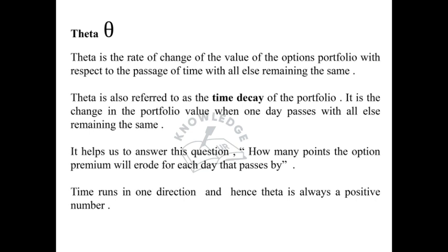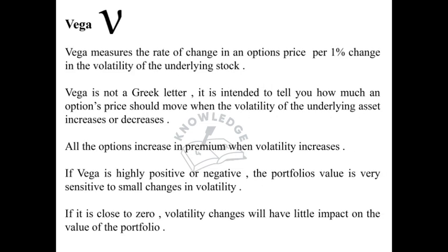The next is Vega. Vega measures the rate of change in an option's price per 1% change in the volatility of the underlying stock. Vega is not a Greek letter, but it is intended to tell you how much an option's price should move when the volatility of the underlying asset increases or decreases. All options increase in premium when volatility increases. If Vega is highly positive or negative, the portfolio value is very sensitive to small changes in volatility. If it is close to zero, volatility changes will have little impact on the value of the portfolio.